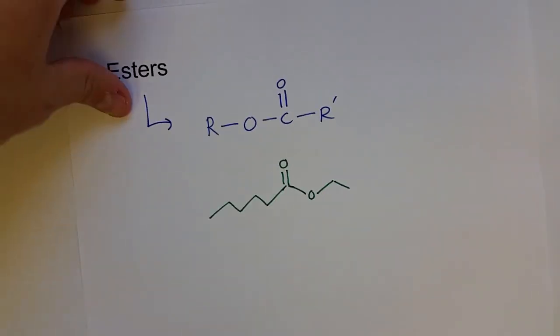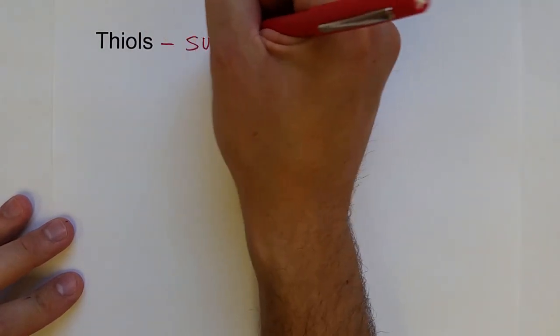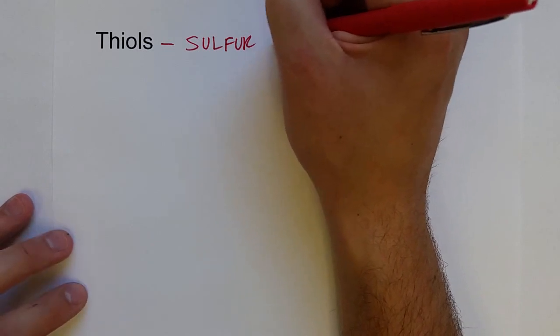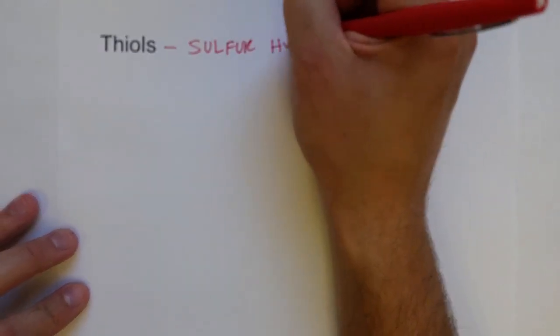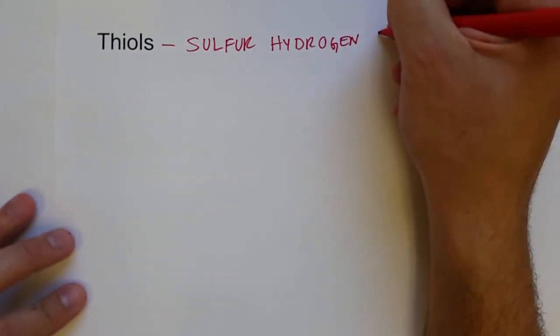Let's start talking about other elements that can be bonded to carbon. One is called a thiol, and this is when a sulfur-hydrogen group is bonded to carbon.